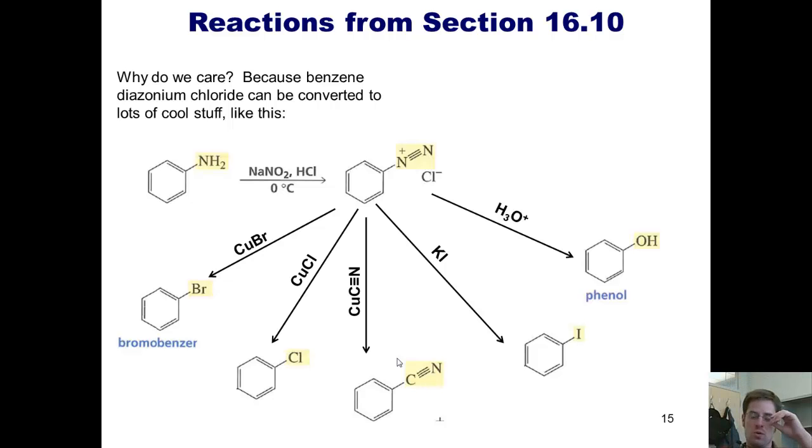We can also form fluorobenzene from diazonium chloride, but we have to first of all replace the chloride with an alternate counterion. So we react benzene diazonium chloride with HBF4, and we can replace the chloride counterion with BF4 minus. If we then take this intermediate and treat it with HCl, it will replace the diazonium moiety with a fluorine. That is the way that we access fluorobenzene.